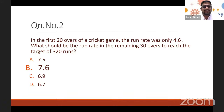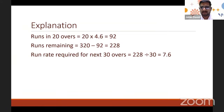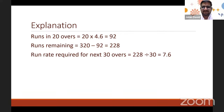Explanation: Runs in 20 overs = 20 × 4.6 = 92. Target is 320, so runs remaining = 320 − 92 = 228. Divide 228 by the remaining 30 overs: 228 ÷ 30 = 7.6. That is the required run rate.